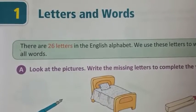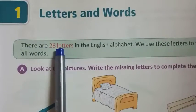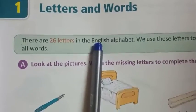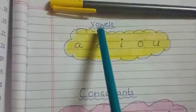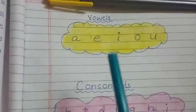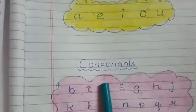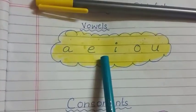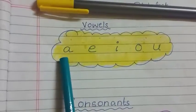How many letters are there in English alphabet? There are 26 letters in English alphabet. Now, these letters are divided into two parts. One is vowels and another one is consonants. How many vowels are there? There are five vowels.